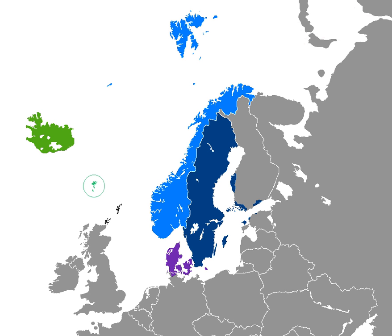Faroese speakers are even better than Norwegians at comprehending two or more languages within the continental Scandinavian languages group, scoring high in both Danish and Norwegian and having the highest score on a Scandinavian language other than their native language, as well as the highest average score. Icelandic speakers, in contrast, have a poor command of Norwegian and Swedish, though they do somewhat better with Danish, as they are taught Danish in school.